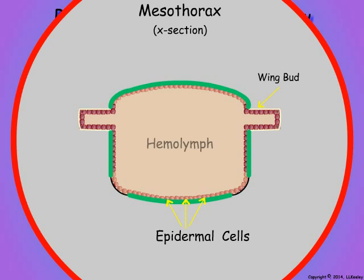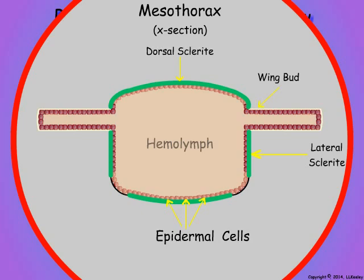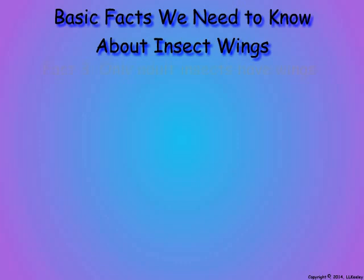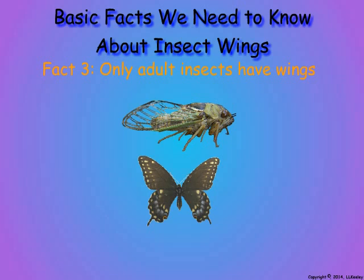Insects were the first animals to evolve wings and fly. The insect wing is not an appendage like the legs that evolved into wings for birds and bats. Rather, the wings of insects are outgrowths of the body wall in the region between the dorsal and lateral cuticular sclerites. The wing buds are continuous with the hemocele and are filled with hemolymph, the insect blood. Only adult insects have fully functional wings.